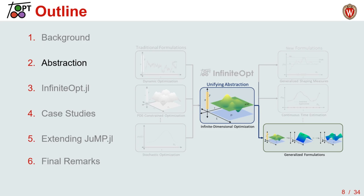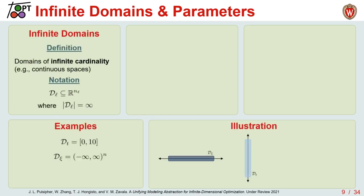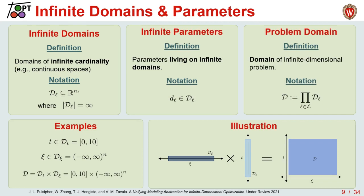Let's talk about the unifying abstraction we've developed to capture these types of problems. We begin with infinite domains and parameters. Infinite domains are domains of infinite cardinality — in other words, continuous spaces. Examples include a time interval or the codomain of a multivariate distribution. We can then define infinite parameters which live on these domains, and derive the problem domain by taking the Cartesian product of these individual domains. This assumes they are independent of one another, which is an assumption we can relax but use today for simplicity.